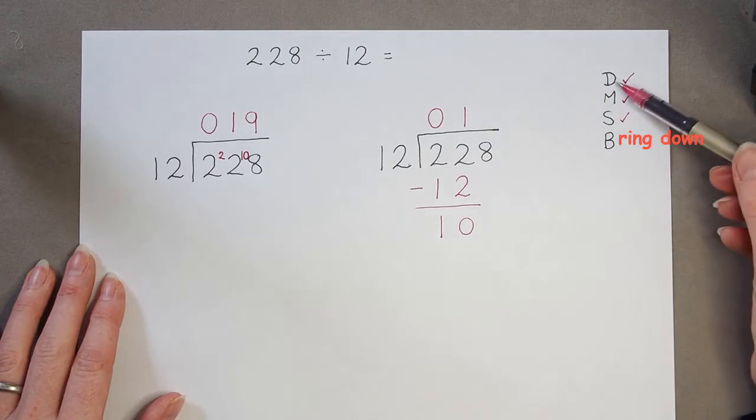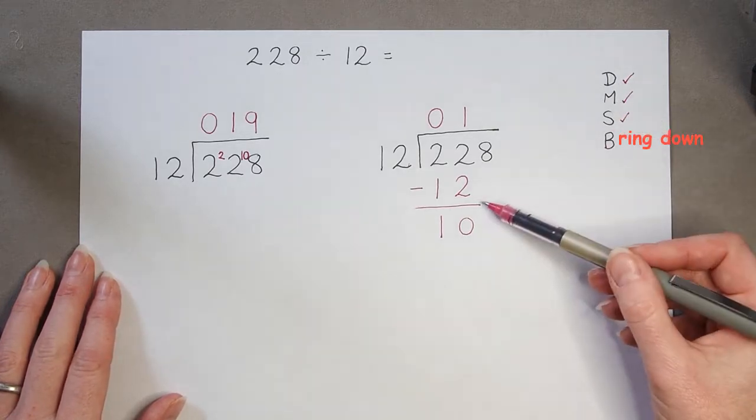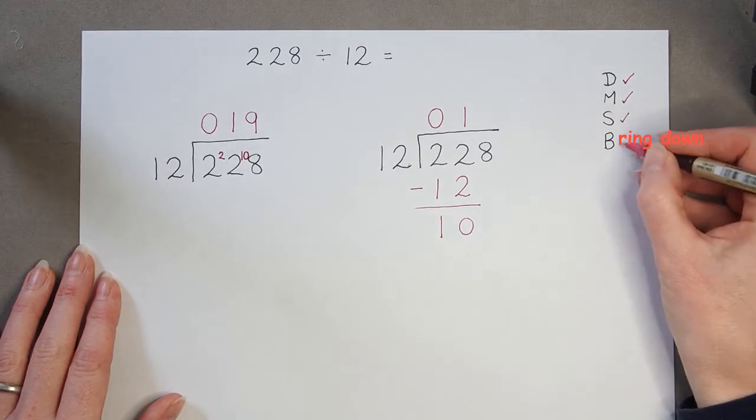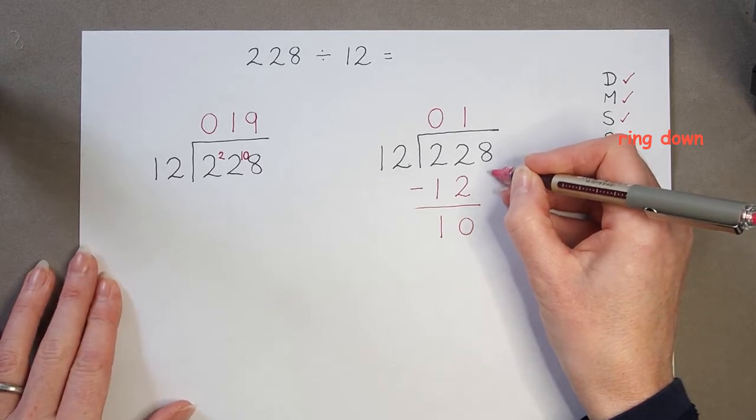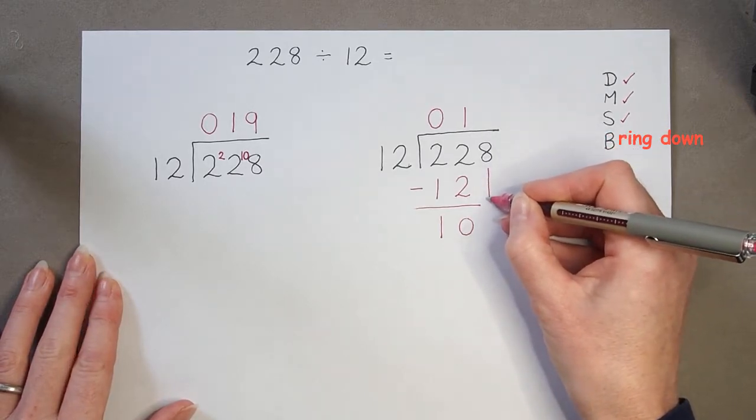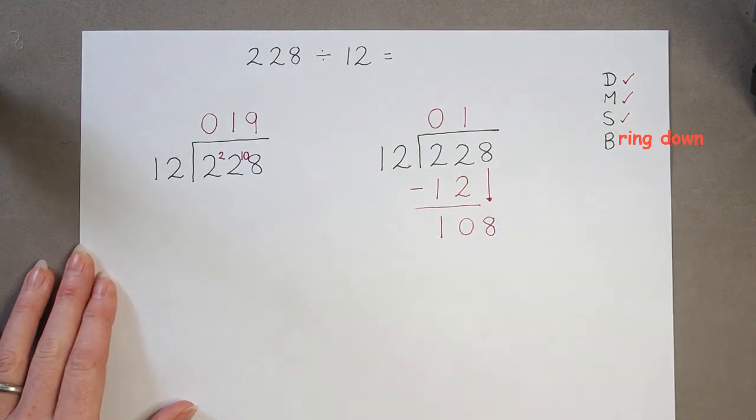So, we've done divide, we've done the multiply, we've done the subtract. Now, we're down to the B. And the B means bring down. And that means we take this digit and we bring it down here and write it on the end.